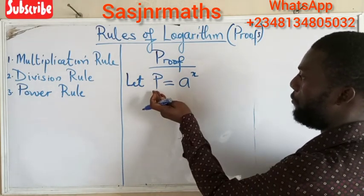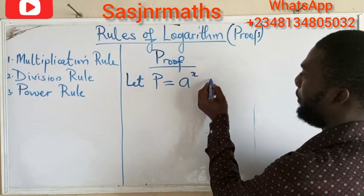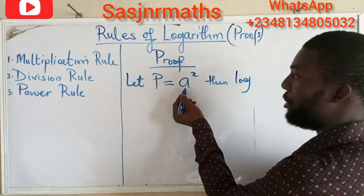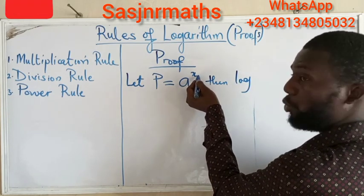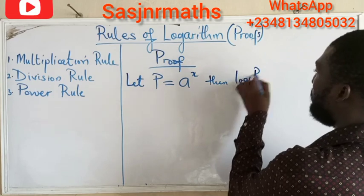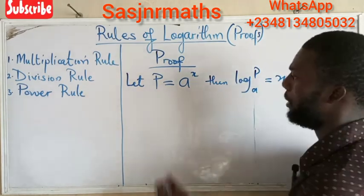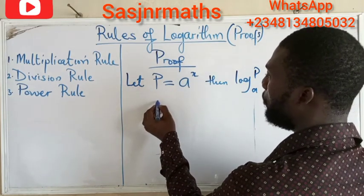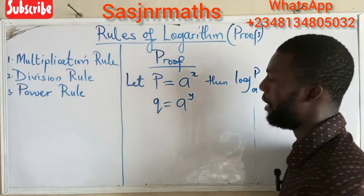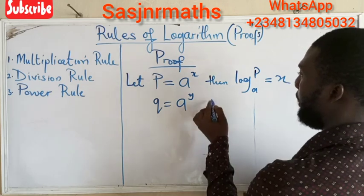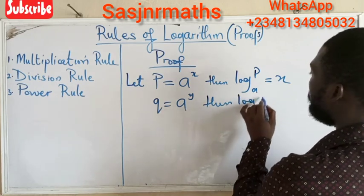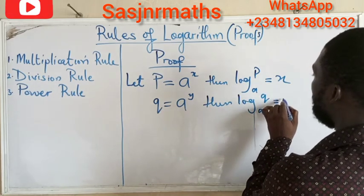So if we let p equal a raised to power x, then switching to logarithm — let's not forget that this base that is raising to its power will go low — we have log base a of p equals x. Then let q equals a raised to power y. Switching from indices form to logarithmic form, we have log base a of q equals y.